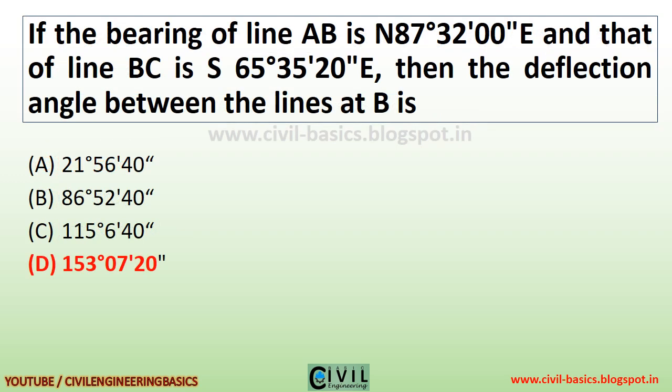If the bearing of line AB is N87°32'00"E and that of line BC is S65°35'20"E, then the deflection angle between the lines at B is 153°07'20".